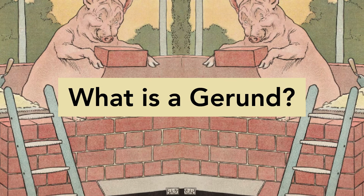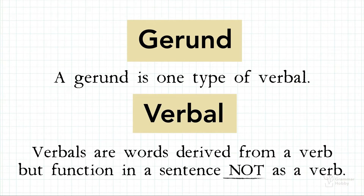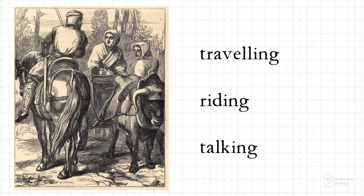What is a gerund? A gerund is one type of verbal. Verbals are words derived from a verb but function in a sentence not as a verb. Let me give you examples. Traveling, riding, and talking look like verbs on a quick glance. But did you know that all of these words could function not as verbs in a sentence?